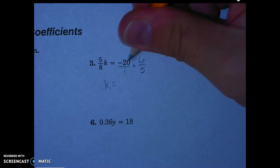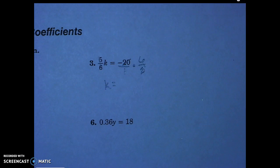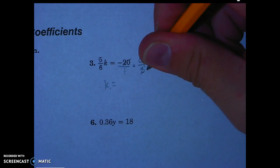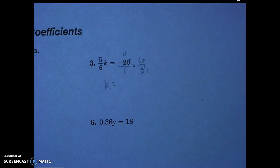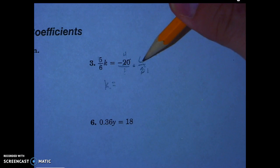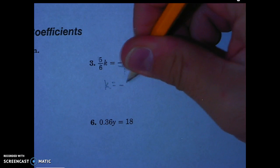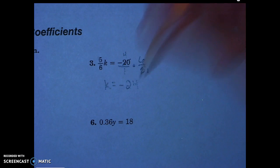I know that 20 and 5 are both divisible by 5. I'm going to simplify these ahead of time. 5 will go into 5 one time. 5 will go into 20 four times. What I end up with here is negative 4 times 6, which is negative 24. Negative 24 over 1 is just negative 24.